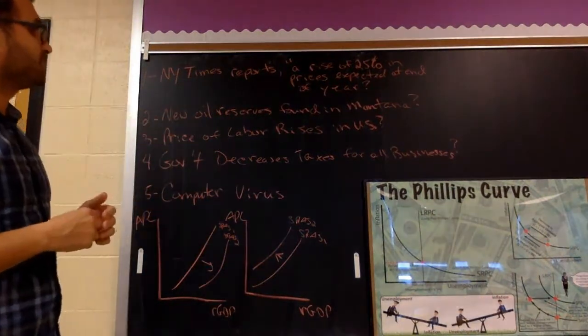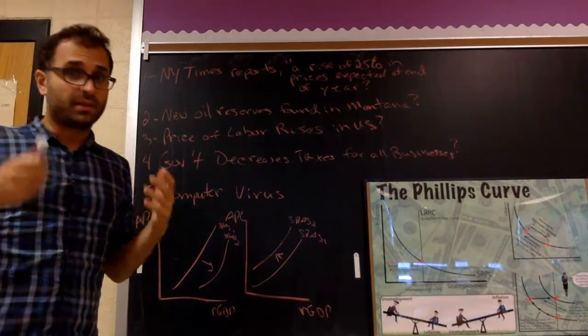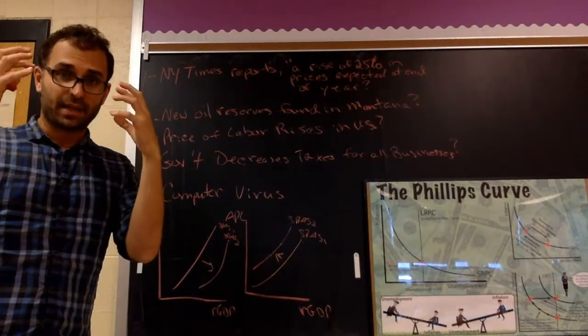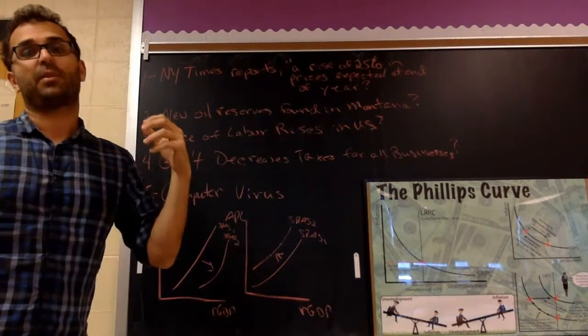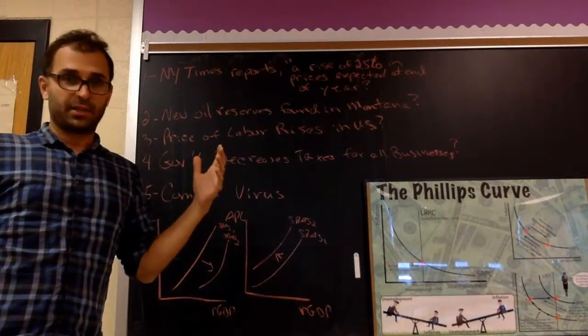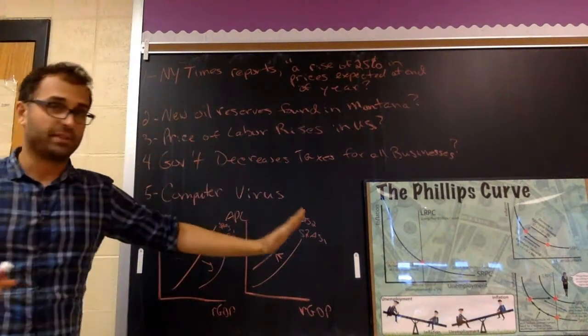Number two, new oil reserves are found in Montana. So the supply of oil is increasing. When the supply of oil increases, the price of gasoline goes down. Therefore, the price of transportation costs go down. Nearly every company uses transportation. So input costs are going down. Aggregate supply will increase, shift to the right.